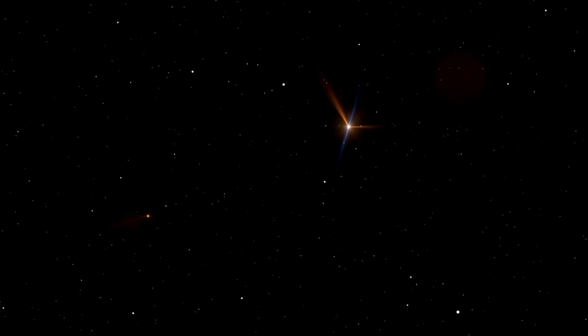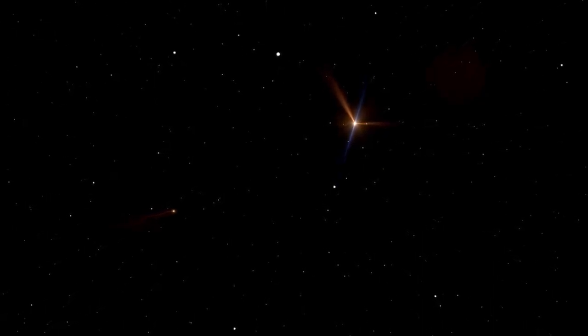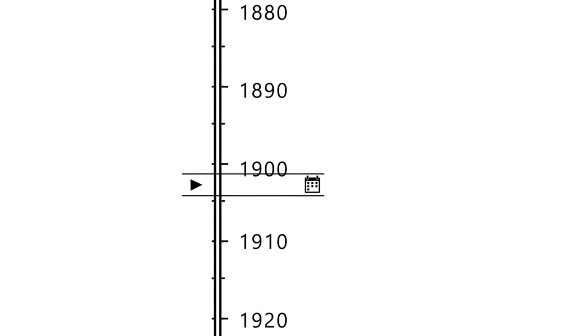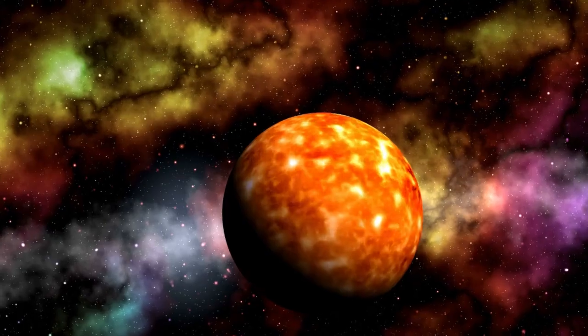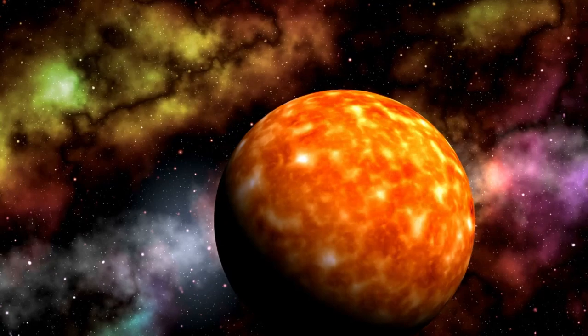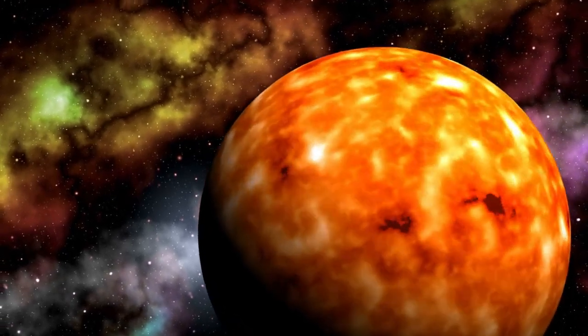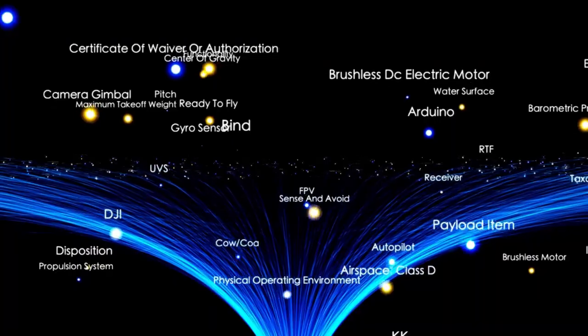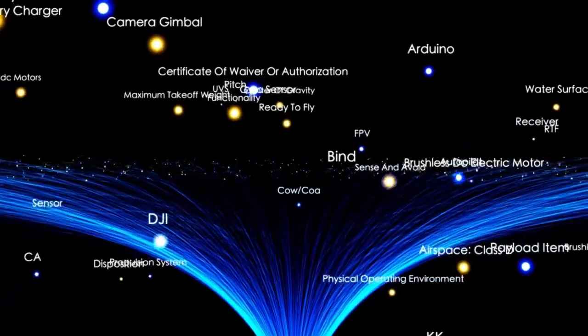Betelgeuse is around 100,000 times more luminous than the Sun, which places it among the brightest stars in the night sky. Its distinct red hue and the fact that it lies in the easily recognizable Orion constellation have made it a fixture of stargazing for centuries. For astronomers, Betelgeuse provides a valuable opportunity to study the life cycle of massive stars.